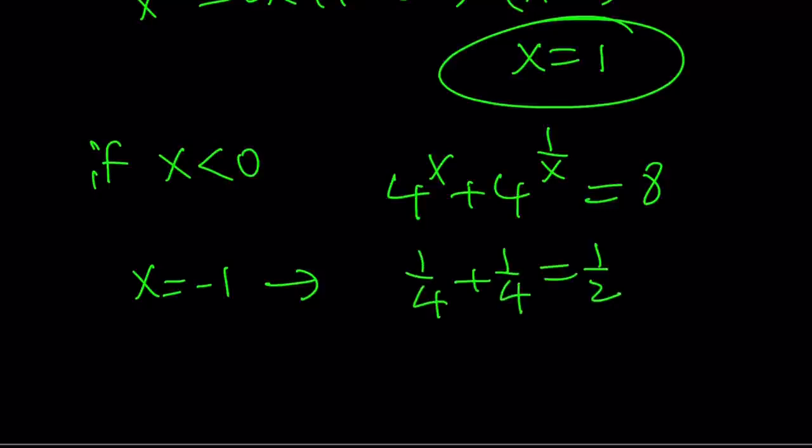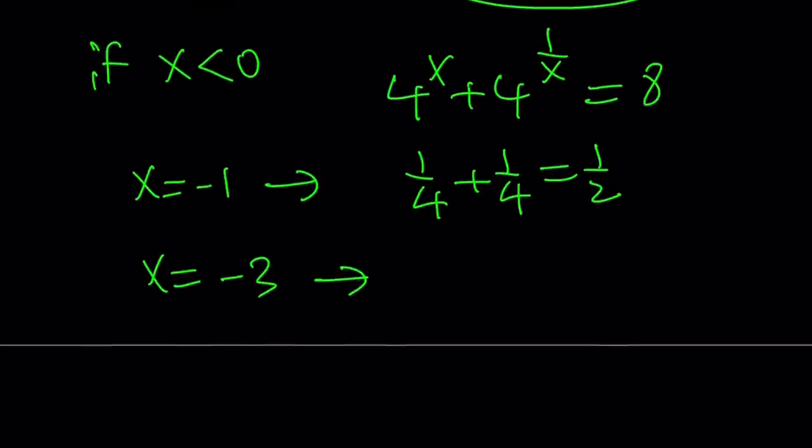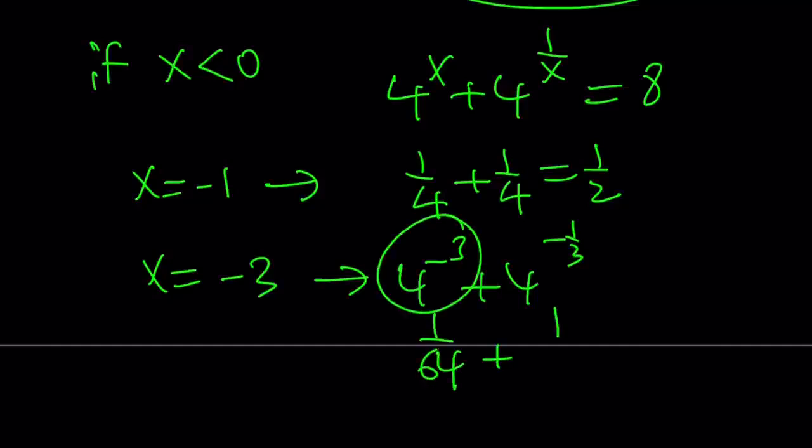That's definitely much less than 8. Well, if we use smaller or negatively larger values like x equals, I don't know, negative 3. Is that going to matter? Is that going to change anything? Well, we have 4 to the power of negative 3 plus 4 to the power of negative 1 third. Now this is like 1 over 64. Very small number. And this is going to be like 1 over cube root of 4.